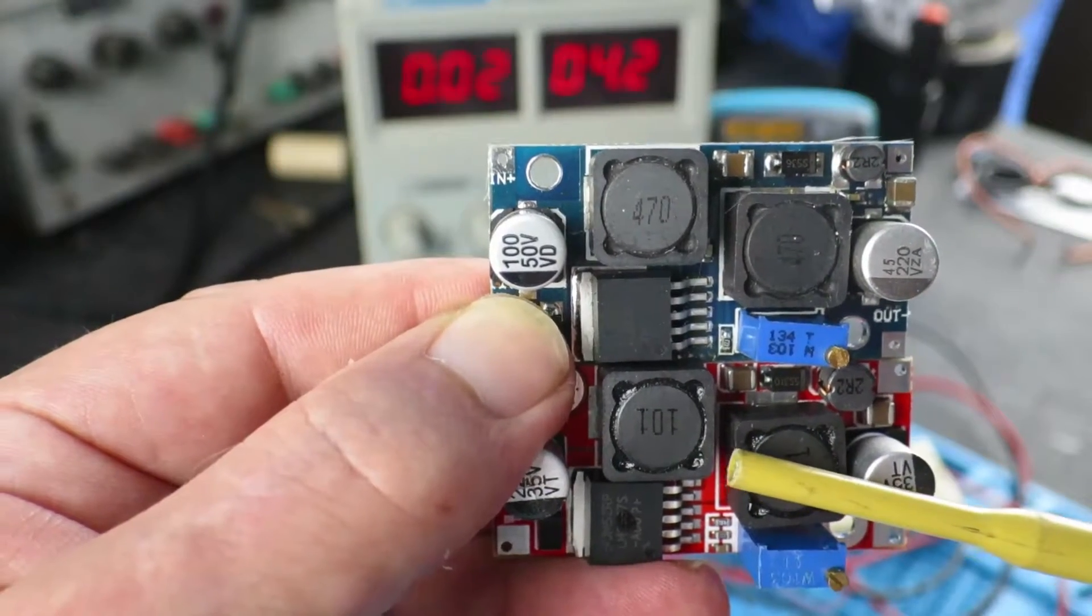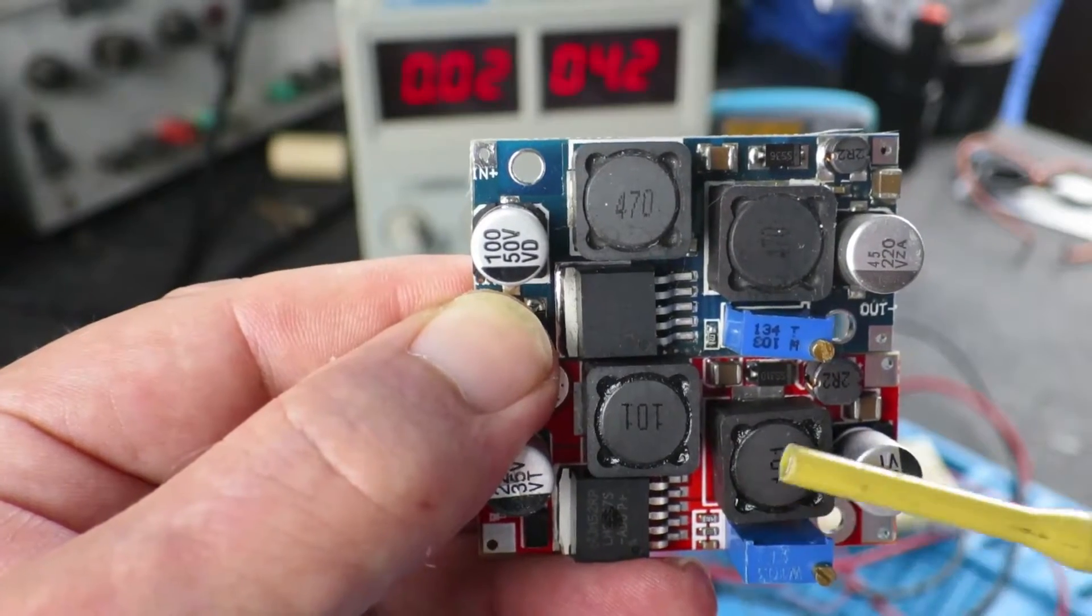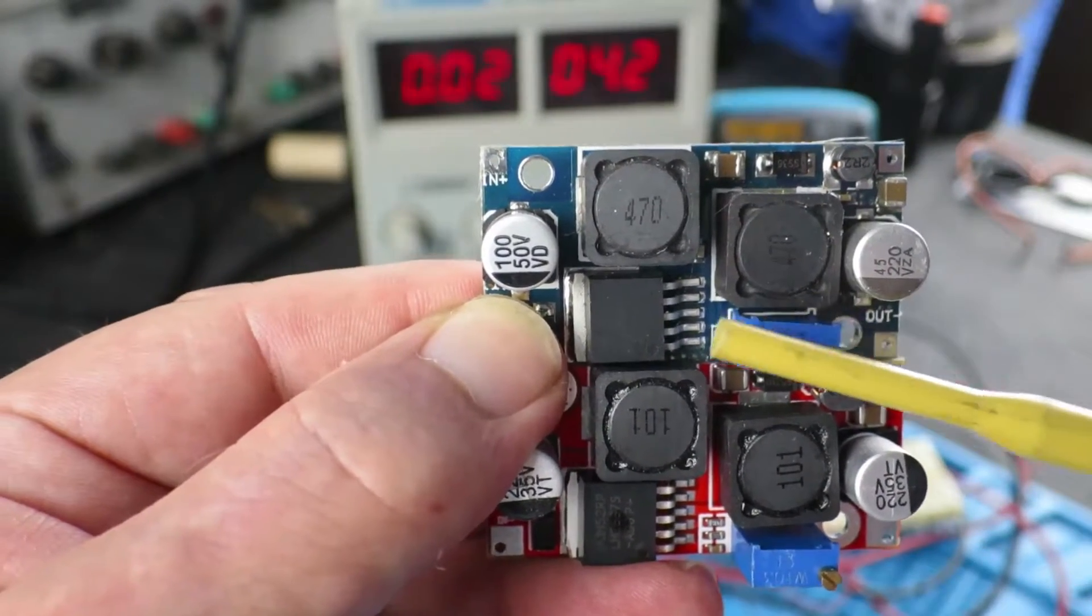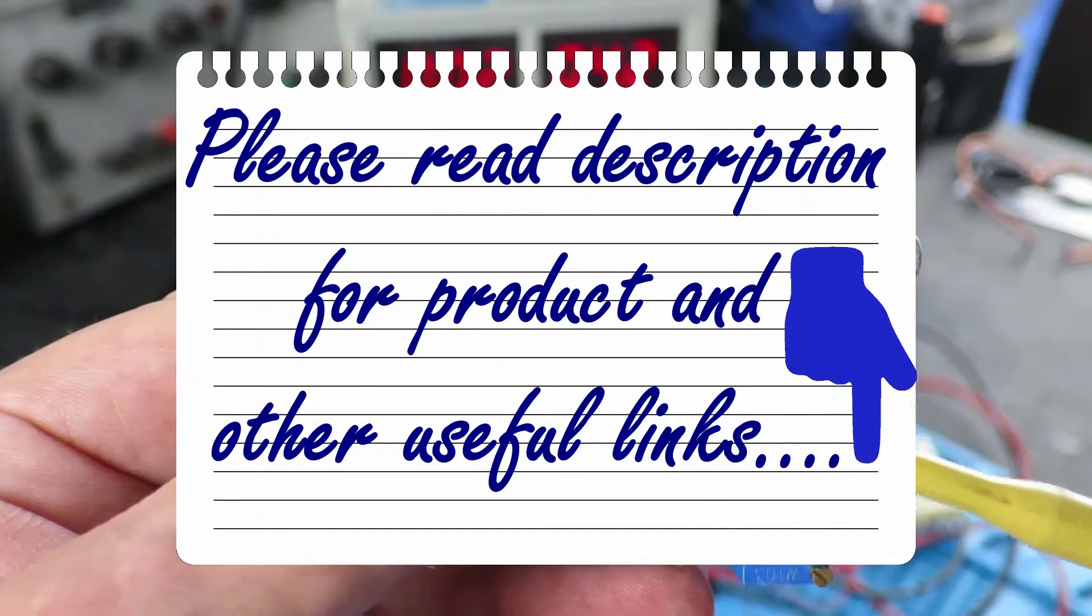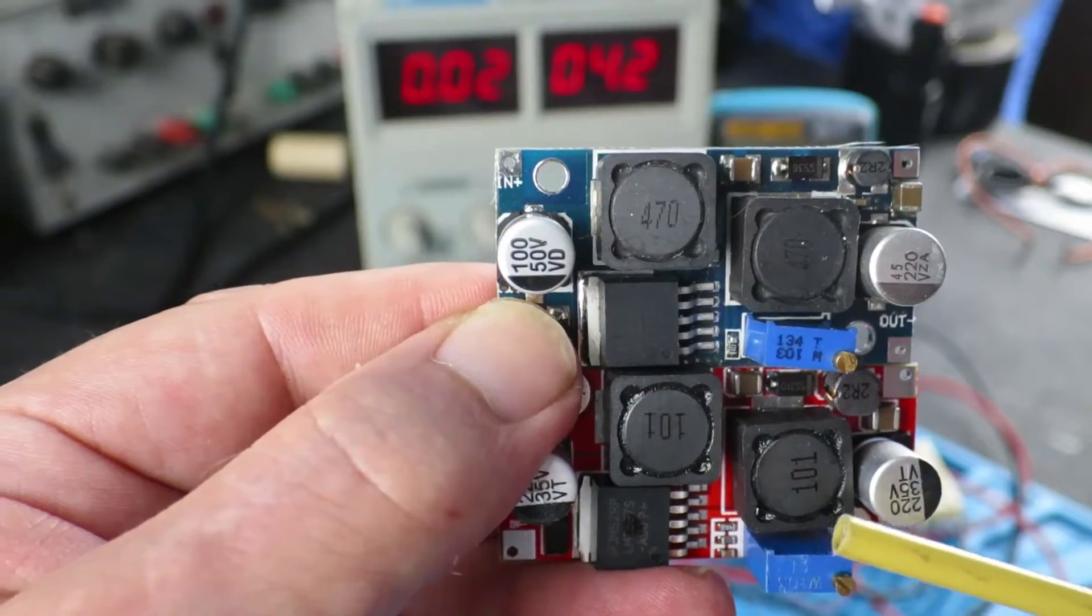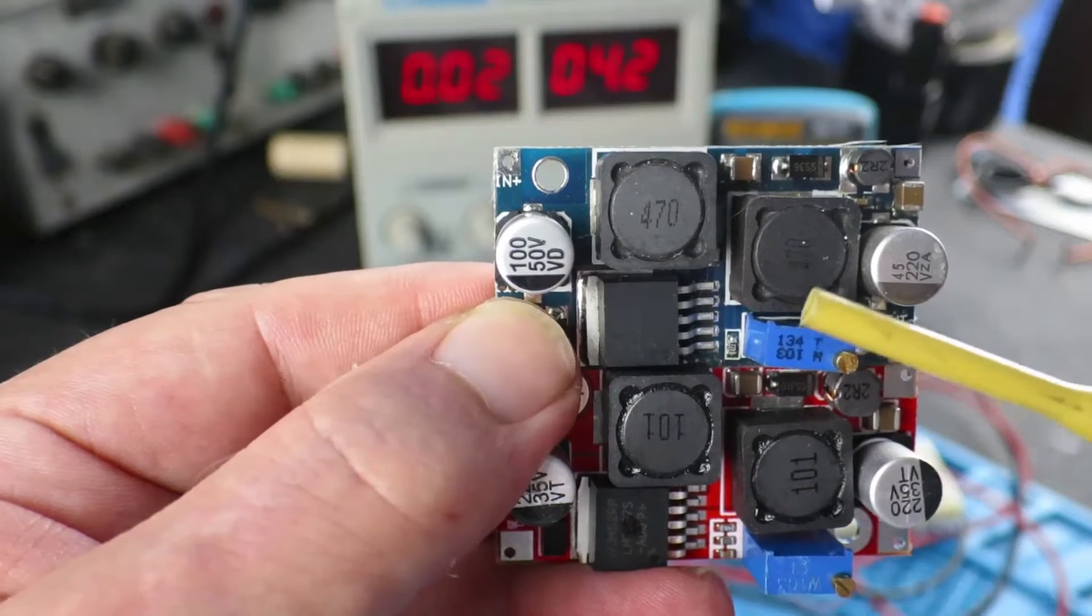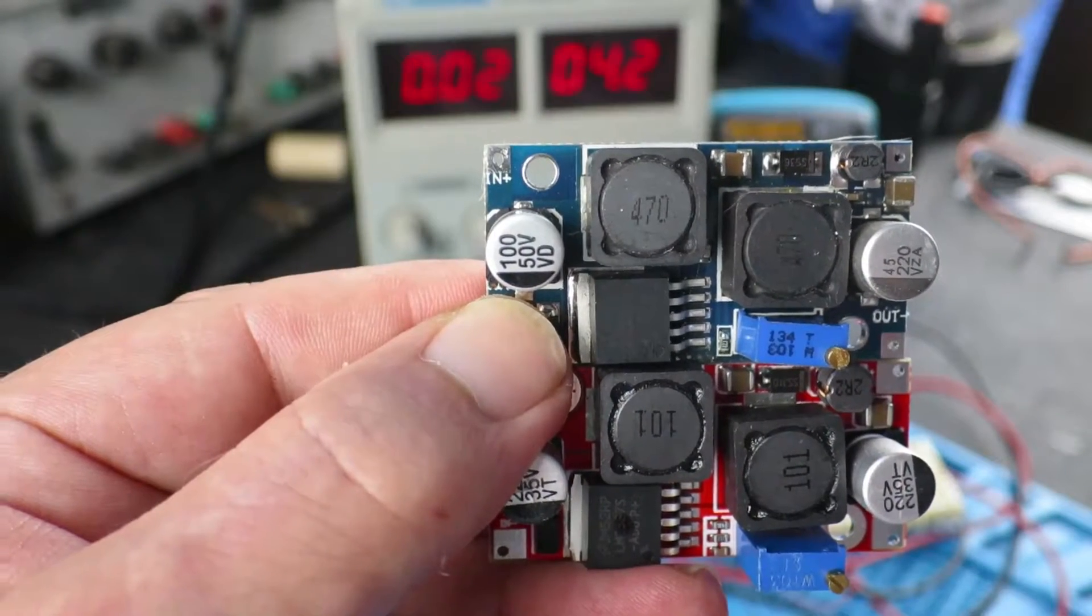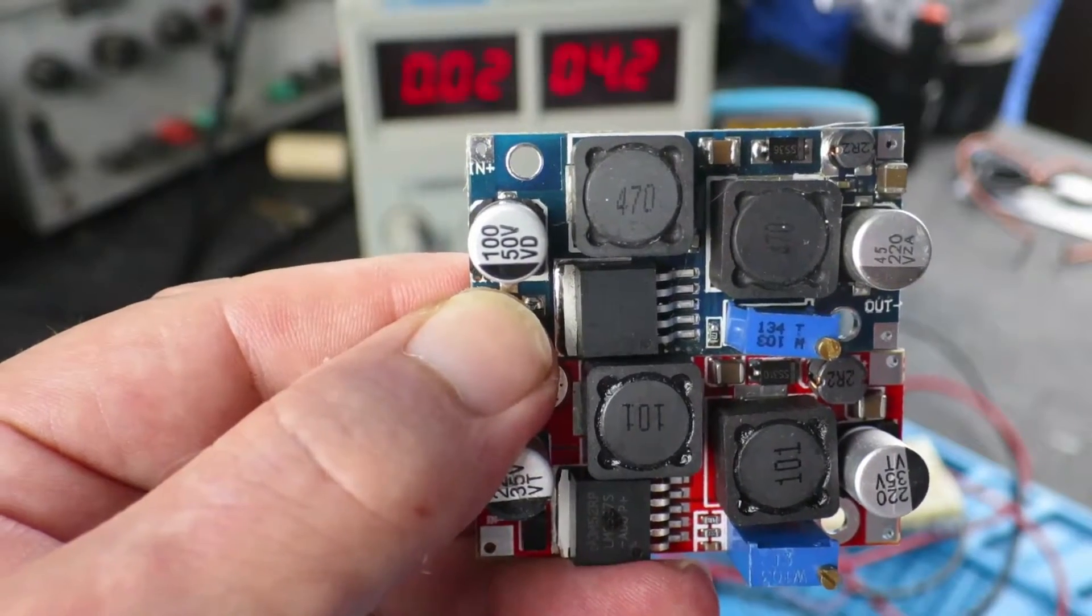This board below, although the layout seems to be pretty much identical, is based on a different chip. This is the XL6009 and this chip is an LM2587 flyback. So will it behave any differently to this guy and be more suitable for our solar panel application? Let's take a look.